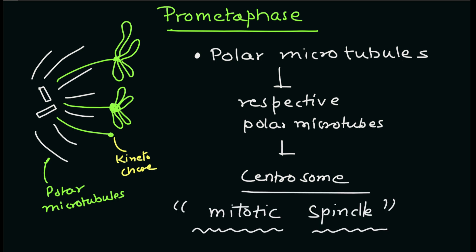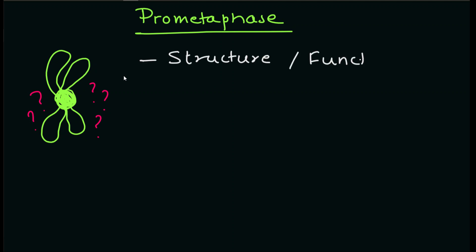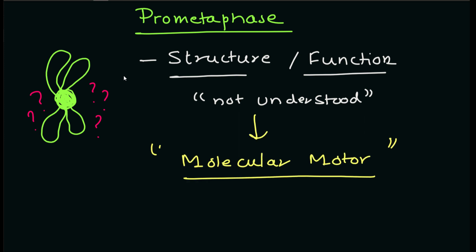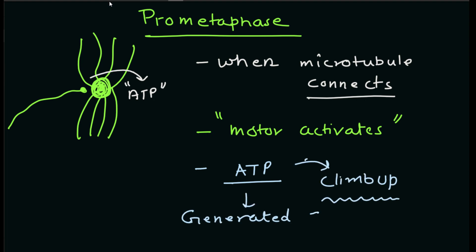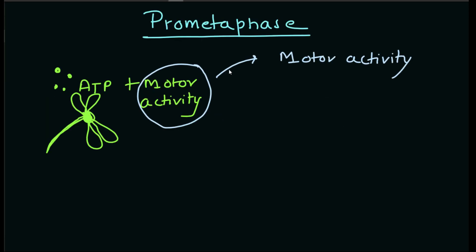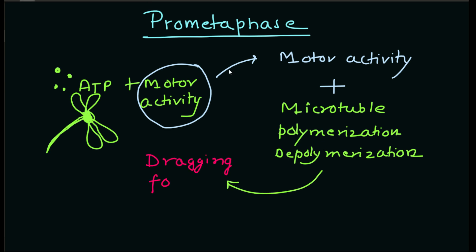Although the structure and function of kinetochores are not completely understood, it is known that they contain some type of molecular motor. When a microtubule connects to a kinetochore, the motor activates, utilizing ATP energy to climb up the tube towards the originating centrosome. The motor activity combined with microtubule polymerization and depolymerization provides the dragging force required to later split the chromosome chromatids.